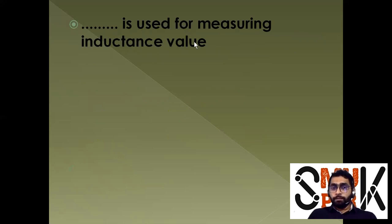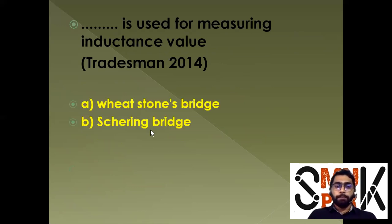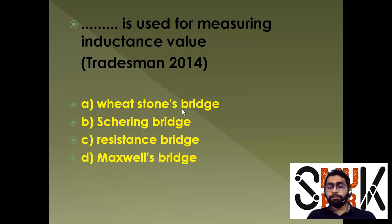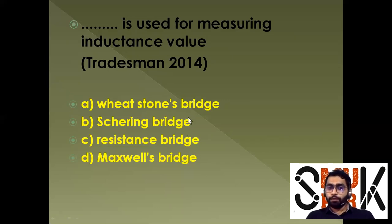The next question is about measuring inductance. Options: A) Wheatstone bridge, B) Schering bridge, C) Resistance bridge, D) Maxwell bridge. Maxwell bridge measures inductance and capacitance. Anderson bridge is also used. For low or medium quality factor inductance, Maxwell bridge is used. For high quality factor, the Hay bridge is used. Schering bridge is for capacitance. Option D — Maxwell bridge — is the correct answer.